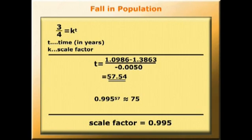The answer is only approximate because we took the logs to only 4 decimal places. So it would take Bulgaria 57 to 58 years, about two generations, to reduce its population by a quarter, if the rate of decline is half of 1% of its people annually.